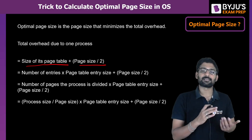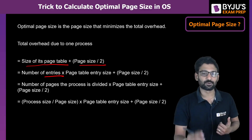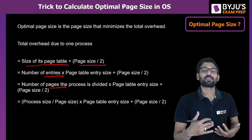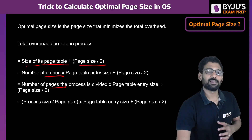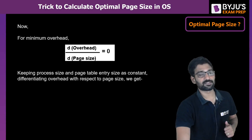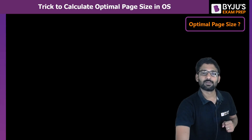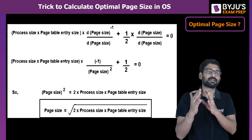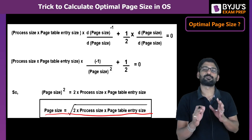The page table size is: number of entries × entry size, and number of entries equals number of pages. Expanding all of this, we want the minimum page size. Applying differentiation of overhead with respect to page size and solving, we finally get the page size as the square root of the expression.